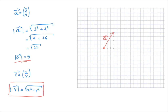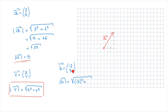Now that we know the formula, let's quickly work through a second example. Let's say we need to calculate the magnitude of vector b, which has coordinates negative 2 and 3. Using the formula we've just seen, the magnitude of b is equal to the square root of negative 2 squared — and when we have a negative component, it's worth writing it in parentheses as we square it — plus 3 squared. This equals the square root of (−2)², which is negative 2 times negative 2, which is 4, plus 3 squared, which is 9.